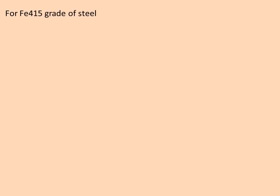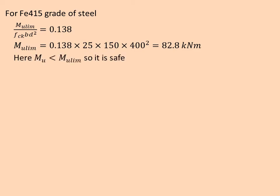For Fe415 grade of steel, MU limit / fck·b·d² = 0.138. MU limit is equal to 0.138 × 25 × 150 × 400² = 82.8 kNm. Here MU < MU limit, so it is safe. That is, it is an under-reinforced section.